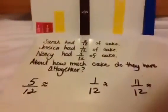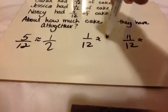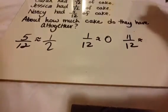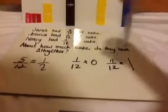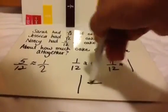So on this board: 5 twelfths is about 1 half, 1 twelfth is about 0, and 11 twelfths is about 1 whole. When you put it all together, 1 half plus 0 plus 1 is 1 whole and 1 half.